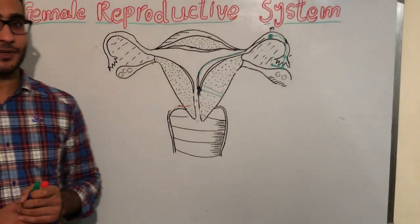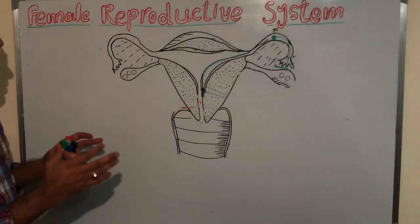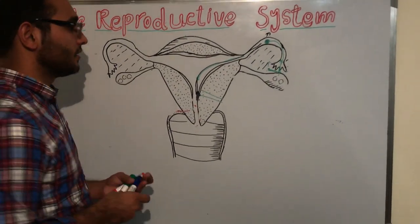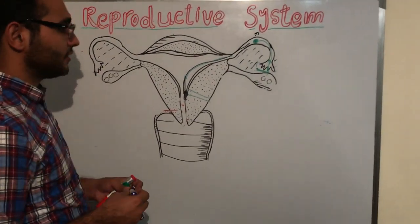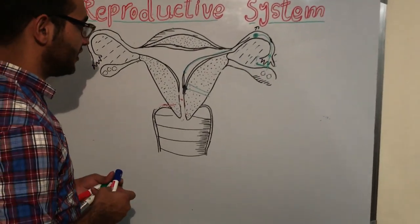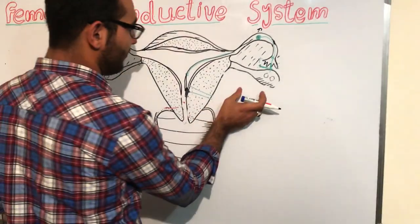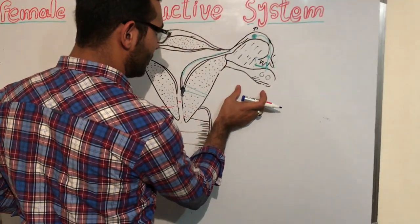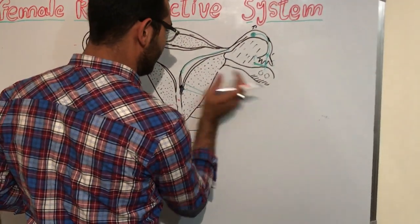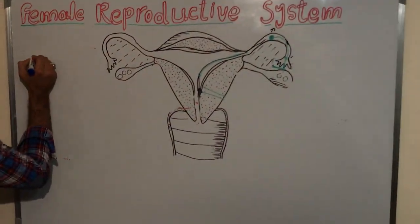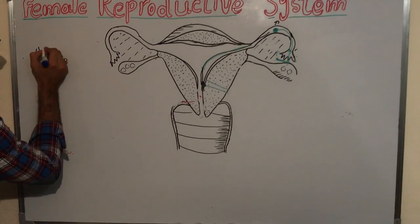Today our topic is about the ligaments of the uterus — the main ligaments of the uterus. We will discuss them here. The first one we will discuss is the ovarian ligament.